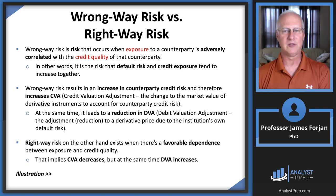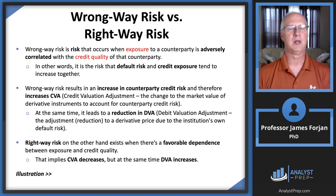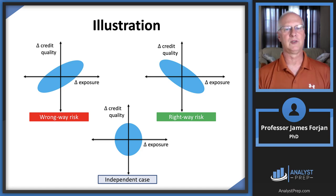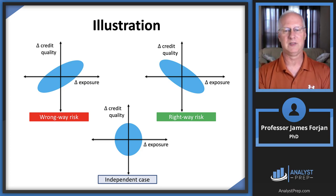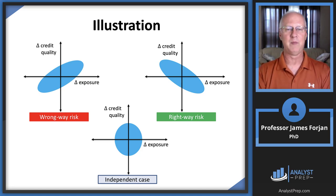Wrong way risk results in an increase in counterparty risk and therefore increases the CVA. Right way risk, on the other hand, exists when there's a favorable dependence, which implies CVA decreases. On the graph, wrong way risk shows an upward slope between change in exposure and change in credit quality, while right way risk shows a downward slope. The independent case — like seeing the barrel of oil — means exposure doesn't depend on counterparty creditworthiness.